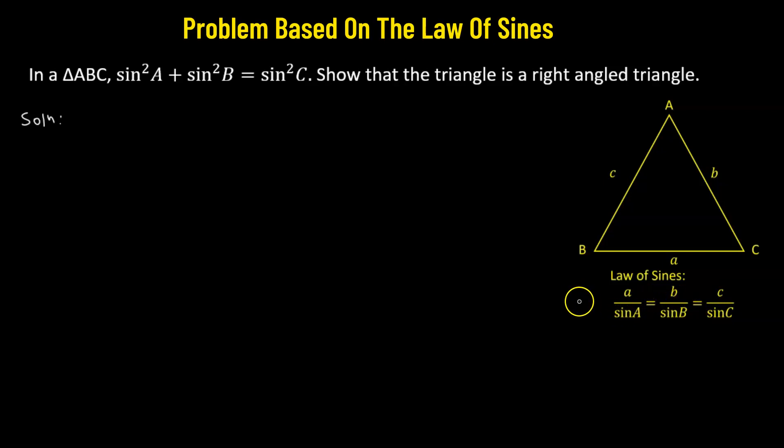Now, in order to work with our problem, let us suppose that these three ratios equal a constant given by 1 over lambda, such that we can represent sine A as a times lambda, sine B will be equivalent to b times lambda, and sine C will be equivalent to c times lambda.